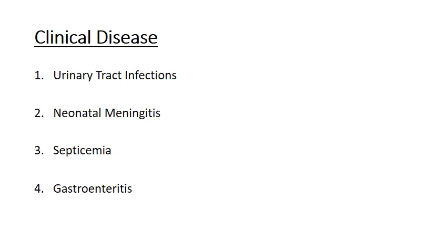So what kind of diseases do we see? UTIs originate in the colon and somehow contaminate the urethra, ascend into the bladder, and may even migrate into the kidney or prostate. This is especially associated with patients on catheters — anytime you have a patient on a catheter, there's a higher likelihood of infection. We also see it in young children, but really E. coli UTIs can occur in any patient of any age.